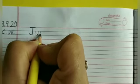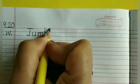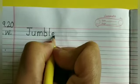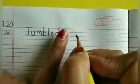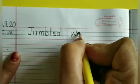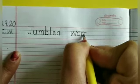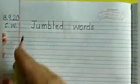U, M, B, L, E, D. Jumbled. Now give one finger gap and write words. W, O, R, D, S. Now since this is a margin line, in the margin we are going to write down the numbers.